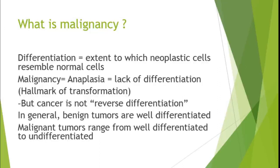The word 'anaplasia' means there is no differentiation at all — it is not simply the reverse of differentiation, it is a specific grade. In general, there are four grades: benign tumors are well differentiated without a grading system, while malignant tumors range from well differentiated to totally undifferentiated types.